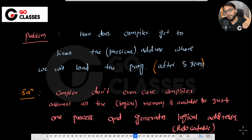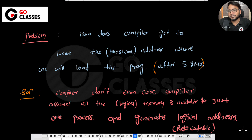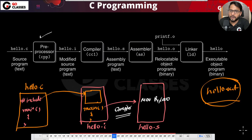At runtime, you can load the program anywhere in physical memory and then convert logical addresses to physical addresses — that conversion is what operating system memory management handles. There are multiple techniques: paging, segmentation, base-and-bound, demand paging, demand segmentation, and so on. We'll cover these in depth in the operating systems course. For now, understand that the compiler generates logical addresses.